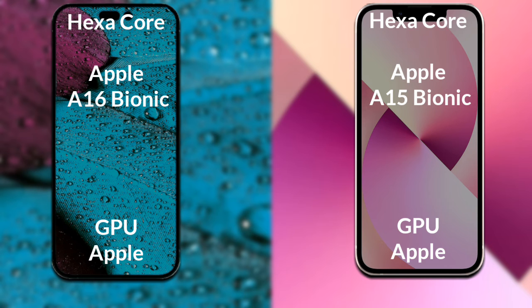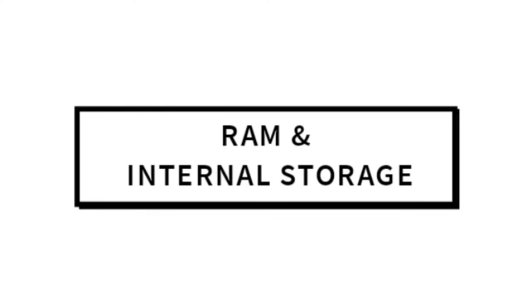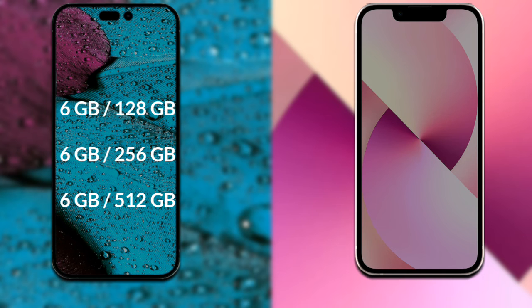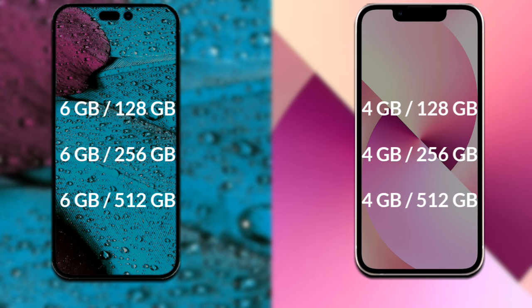Talking about RAM and internal storage: the iPhone 14 Pro Max is available with 6GB RAM and 128GB storage, 6GB RAM and 256GB storage, or 6GB RAM and 512GB storage. The iPhone 13 Mini has 4GB RAM with 128GB storage, 4GB RAM with 256GB storage, or 4GB RAM and 512GB storage.